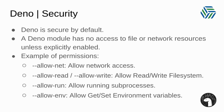Deno is secured by default. A Deno module has no access to file, network, or environment variables unless explicitly enabled. These are some of the flags we can specify when running Deno: --allow-net will allow network access, --allow-read and --allow-write will allow reading or writing the file system, --allow-run will allow running some processes, and --allow-env will allow getting and setting environment variables.